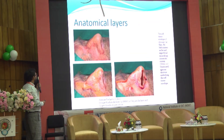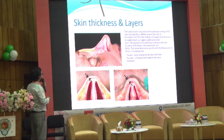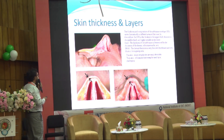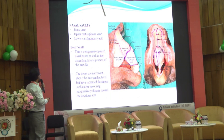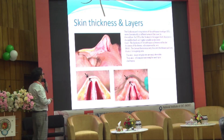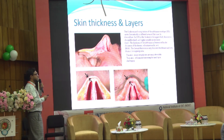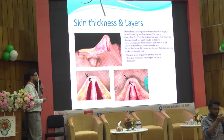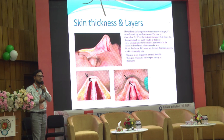Skin thickness varies in different portions of the nose. The skin is thickest in the upper one-third, thinnest in the middle third, and very variable in the lower one-third. In thin-skinned patients, minor irregularities are easily detectable after rhinoplasty.